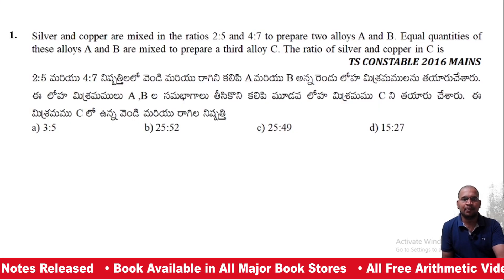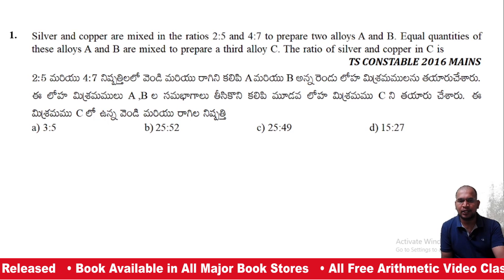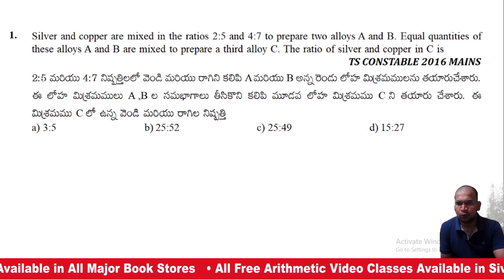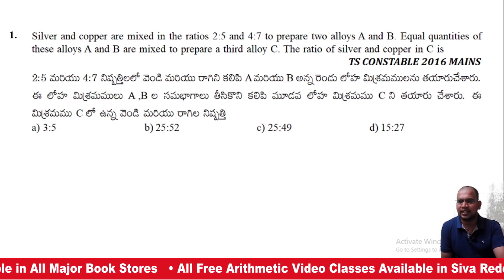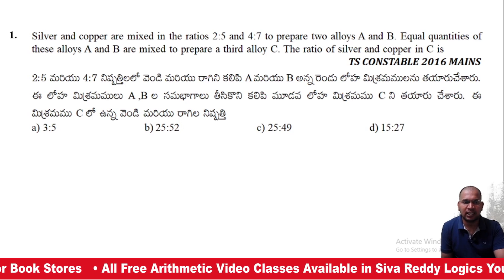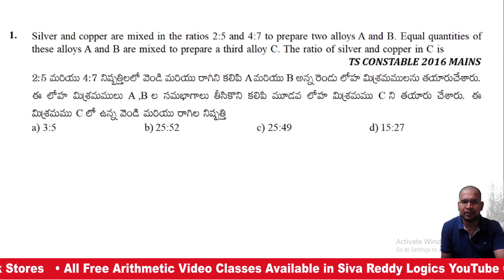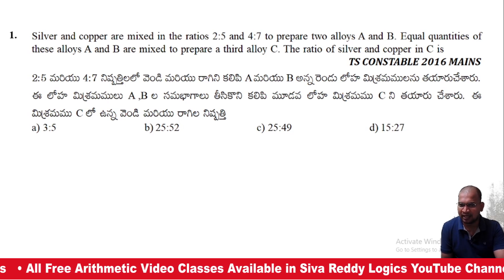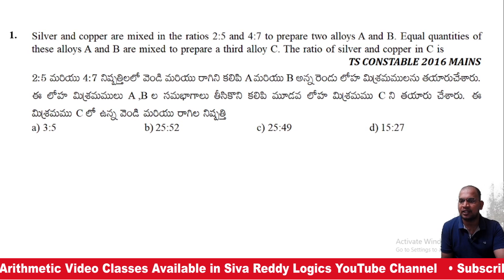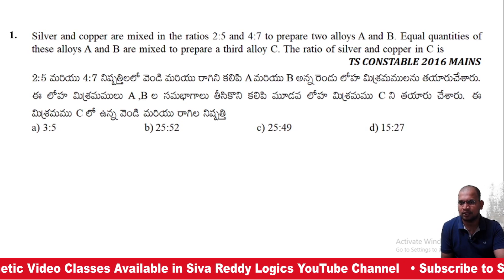Silver and copper are mixed in the ratio of 2:5 and 4:7 to prepare two alloys A and B. Equal quantities of these alloys A and B are mixed to prepare alloy C. The ratio of silver and copper in C is what?